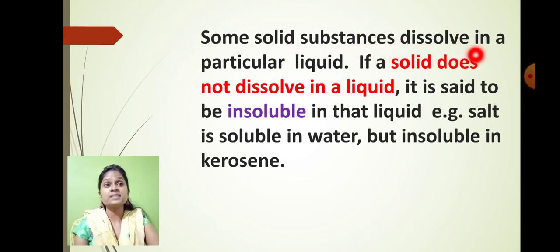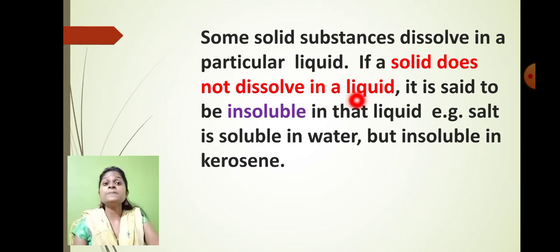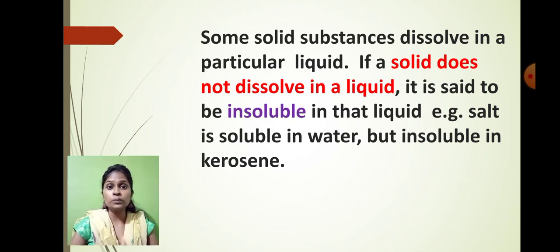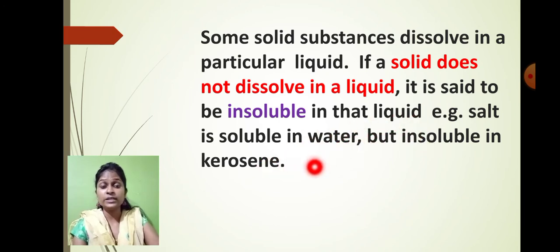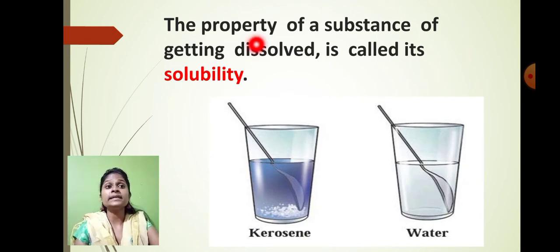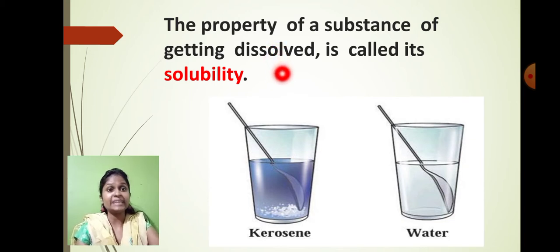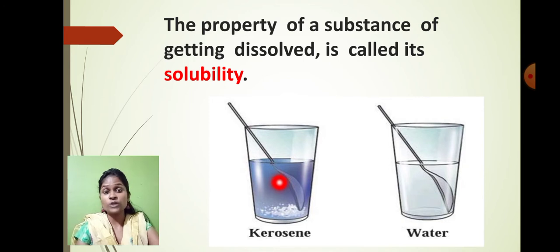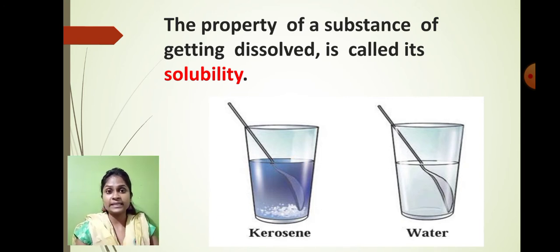The sugar and salt particles are not soluble in kerosene, but the same sugar and salt particles are soluble in water. That means some solid substances dissolve only in a particular liquid. If a solid does not dissolve in a particular liquid, that solid is called insoluble in that liquid. The property of a substance getting dissolved in any type of liquid is called solubility. Salt is soluble in water but insoluble in kerosene. Any substance that dissolves easily — that property is called solubility. Solubility is one of the properties of a substance.